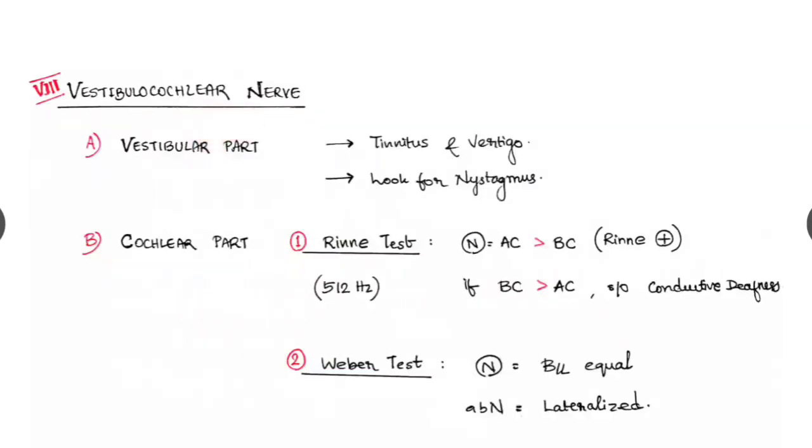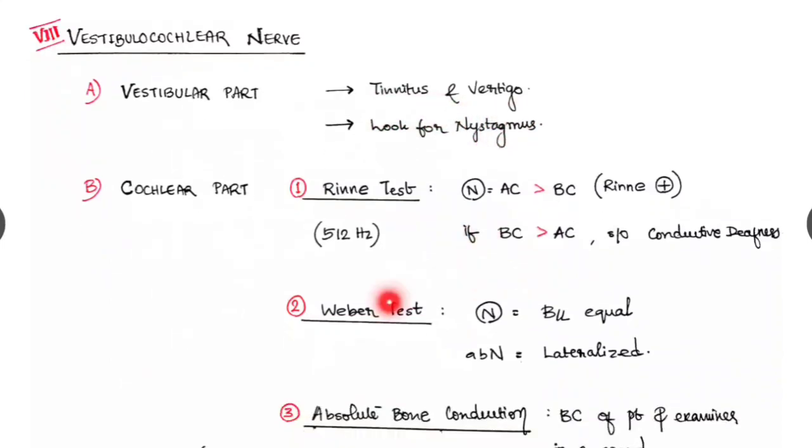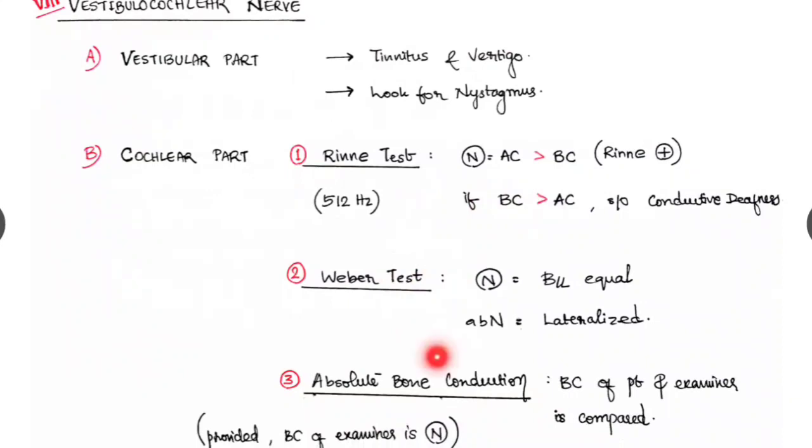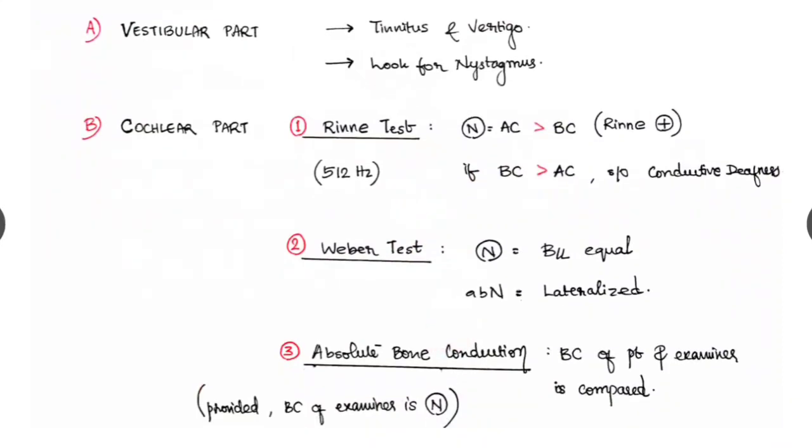The eighth nerve vestibulocochlear nerve. The vestibular part and the cochlear part we have to check. Vestibular part, ask for tinnitus and vertigo and look for nystagmus. The cochlear part three tests we will be doing with tuning fork of 512 hertz.